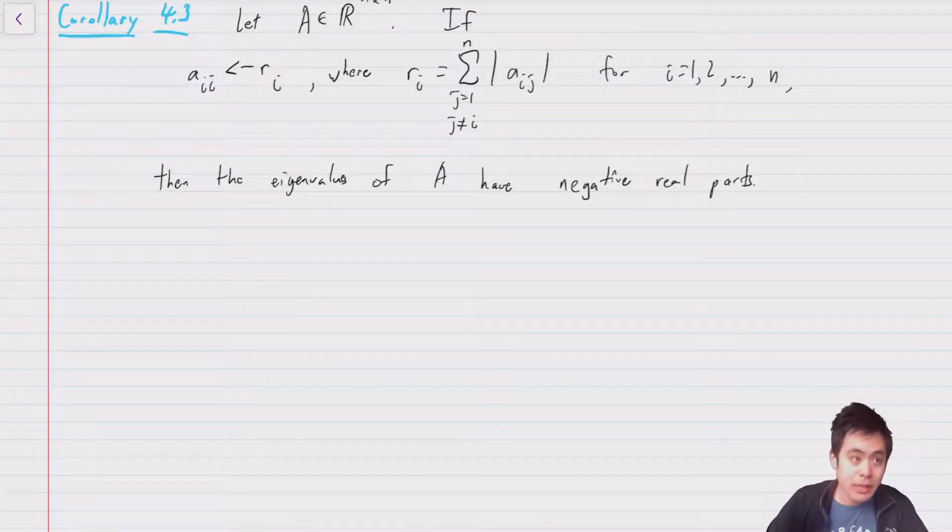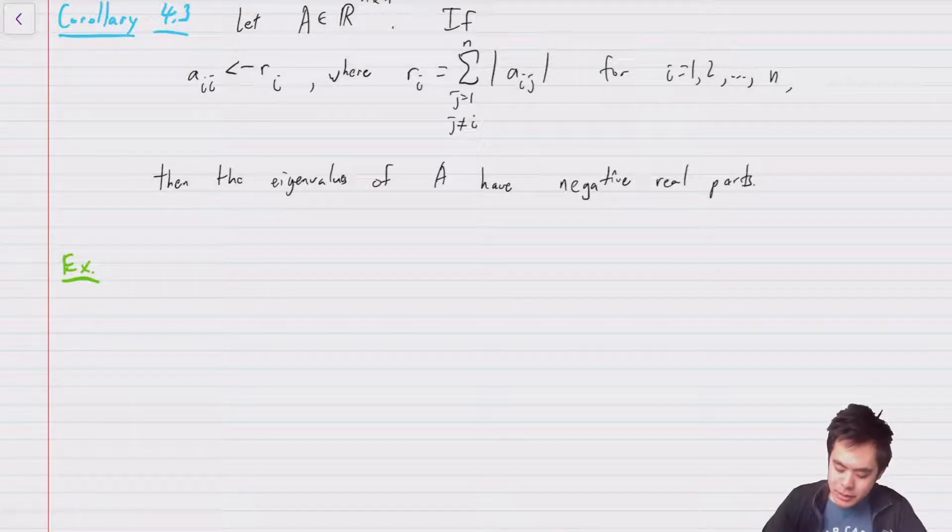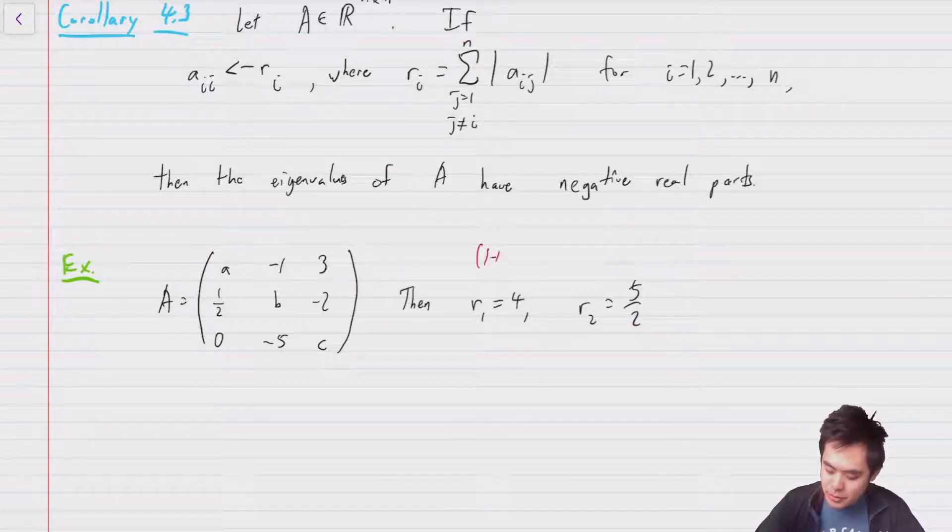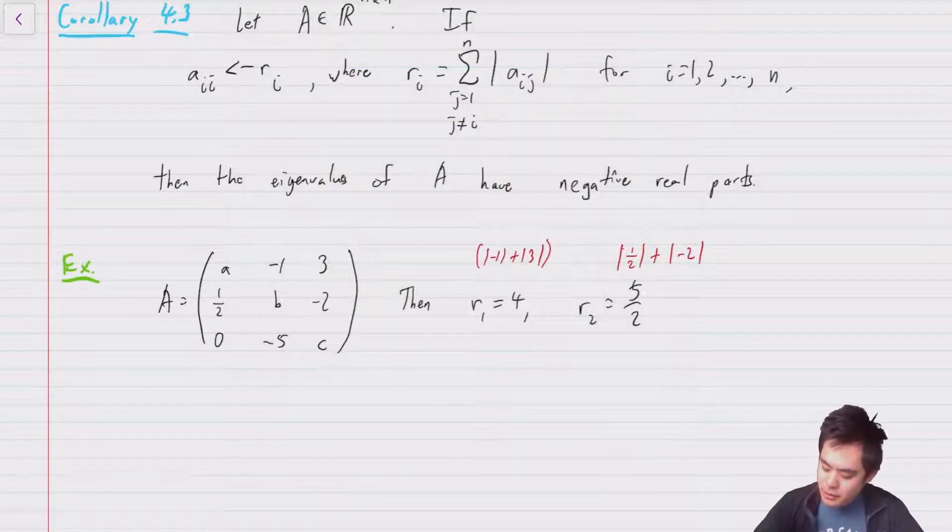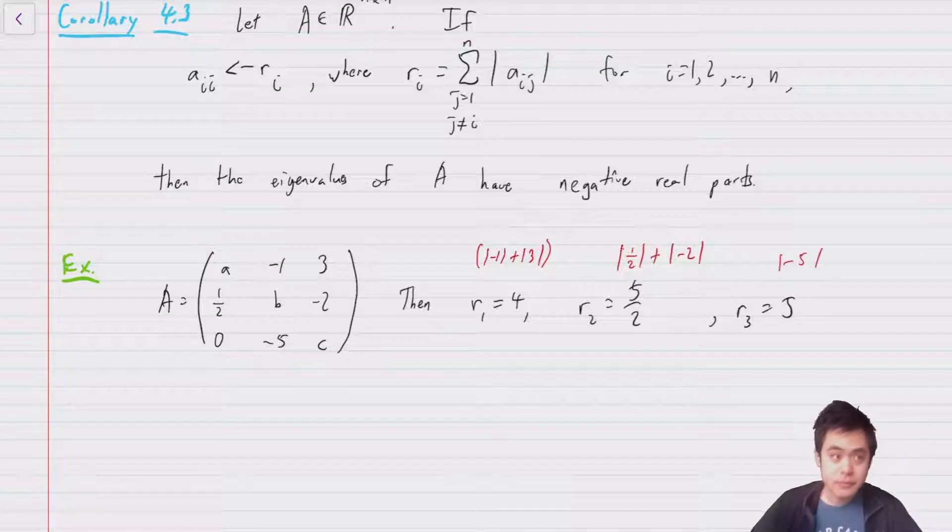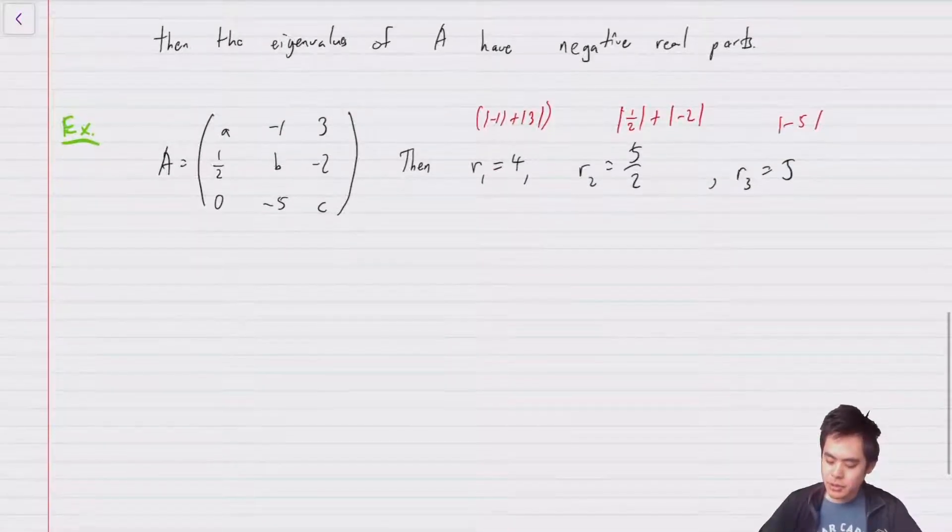So let's go ahead and give an example. So let's say that we had A is equal to the matrix [a, -1, 3; 1/2, b, -2; 0, -5, c]. Well then we have that r_1 is equal to 4, r_2 is equal to 5/2, and this is because this is the absolute value of -1 plus the absolute value of 3, and this is of course the absolute value 1/2 plus the absolute value of -2. And we have r_3 is equal to 5 since this is the absolute value of -5.